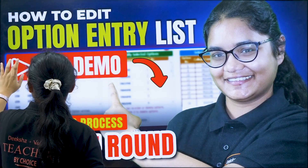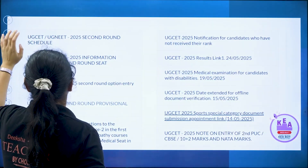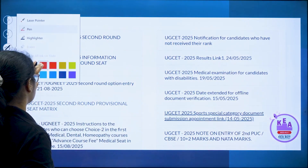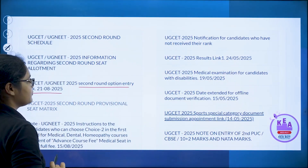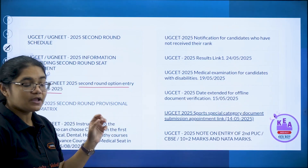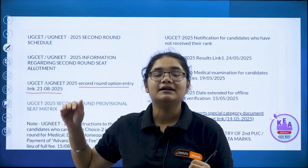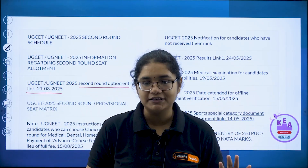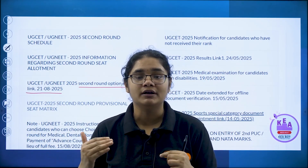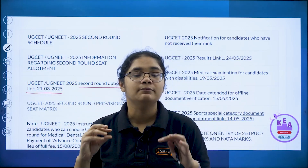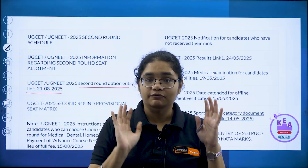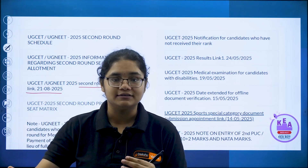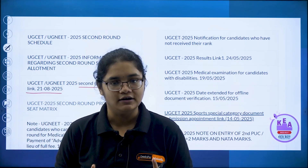Step 1: go to the KEA official website where you will find the second round option entry link. Click on that option. The link might not open sometimes due to technical issues — you have to be patient and keep trying at regular intervals. Even when I was doing it, it took some time. If any error is showing, check again after some time and keep checking at regular intervals.